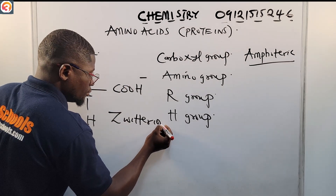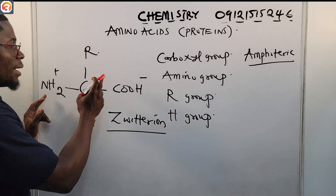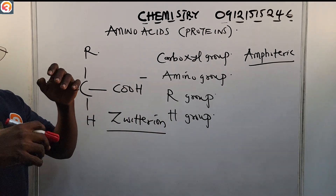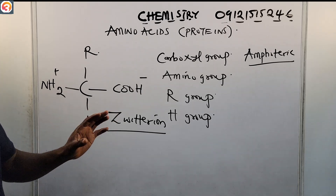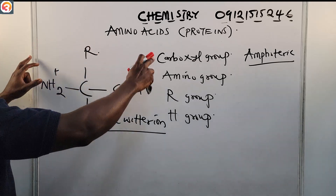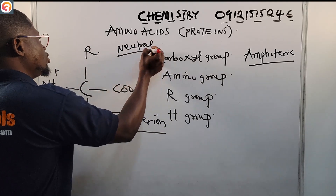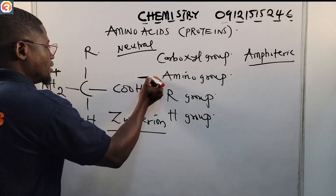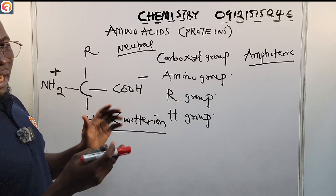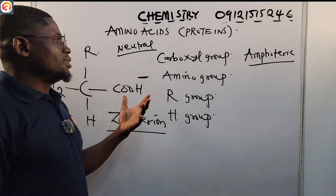Generally we call this a zwitterion. When the amino group and the carboxylic group ionize, what forms is a zwitterion. This structure is completely neutral because it has a positive center and a negative center that cancel out.